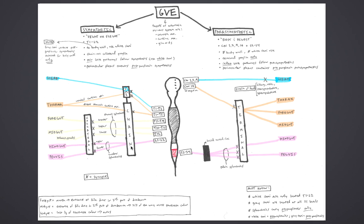The GVE system has both a sympathetic and a parasympathetic component, both of which are two-neuron systems, meaning that there are pre- and postganglionic cell bodies to keep track of. Since these are all motor neurons, all of the cell bodies are multipolar. The targets of the GVE part of the autonomic nervous system are the body's smooth muscle, cardiac muscle, and glands. The two big distributions are sympathetic on the left and parasympathetic on the right of the drawing.